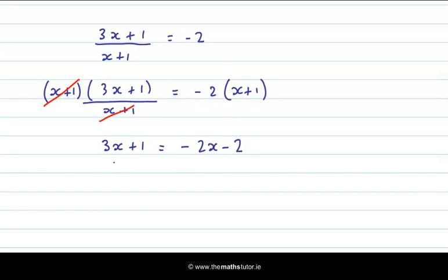Bring the x's to one side, and I get 3x plus 2x is equal to minus 2 minus 1. So we get 5x is equal to minus 3. So x is equal to minus 3 over 5. This is the other solution to my modulus equation.